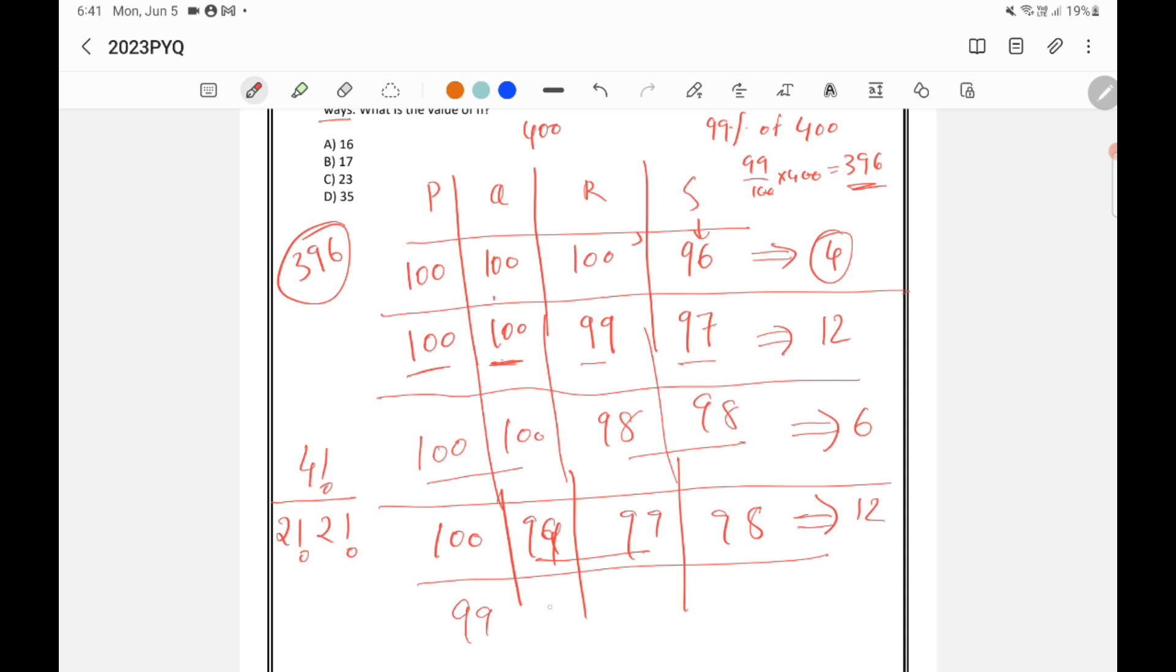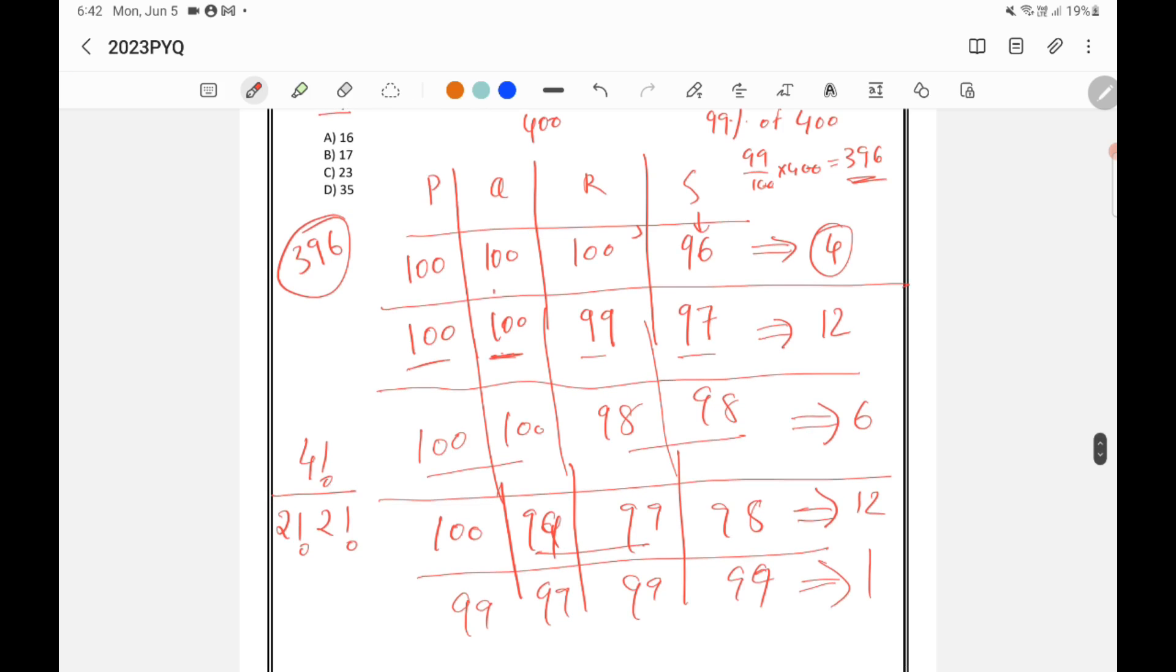Similarly, there is another possibility, 99, 99, 99, 99. This is also a different possibility. So this is only 1 will come because all are 99.